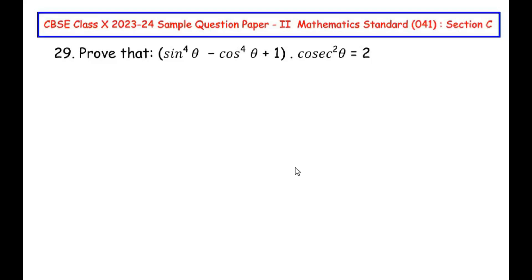Hello and welcome to my channel. In this video we are going to solve the 29th question from CBSE class 10 2023-24 sample question paper set 2 for mathematics standard with subject code 041, section C, where each question is of three marks. This question has an OR question as well, which we will be discussing in the same video. The 29th question is from the introduction to trigonometry chapter: prove that (sin⁴θ - cos⁴θ + 1) × cosec²θ = 2.